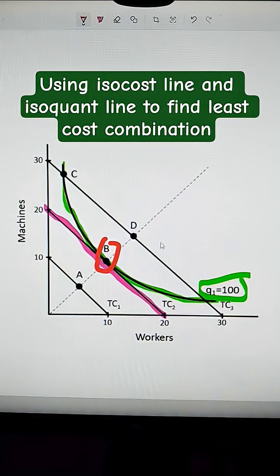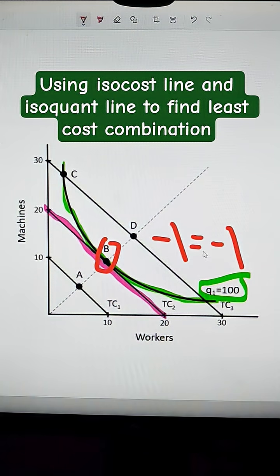The isocost line is actually negative 1, because that's going from 20 down to 20. The slope there has to be negative 1, and so if that point right there is tangent to it, then the isoquant line is also negative 1.